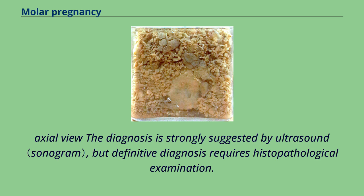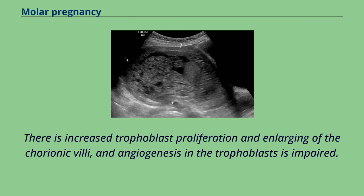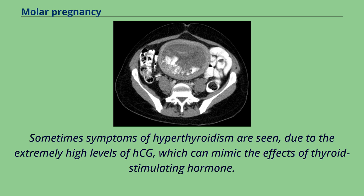The diagnosis is strongly suggested by ultrasound, but definitive diagnosis requires histopathological examination. On ultrasound, the mole resembles a bunch of grapes. There is increased trophoblast proliferation and enlarging of the chorionic villi, and angiogenesis in the trophoblasts is impaired. Sometimes symptoms of hyperthyroidism are seen, due to the extremely high levels of HCG, which can mimic the effects of thyroid-stimulating hormone.